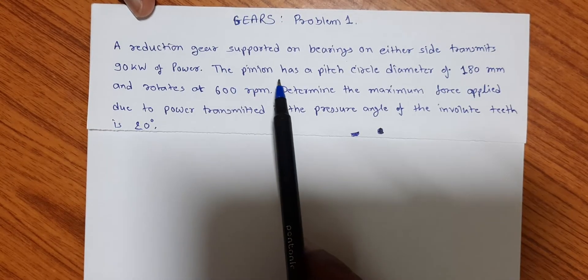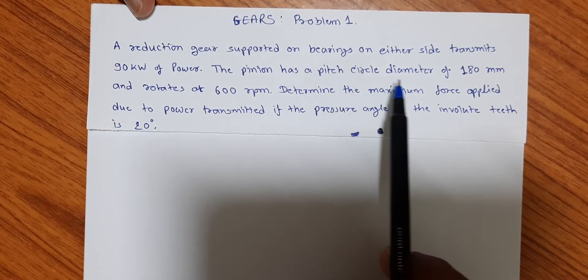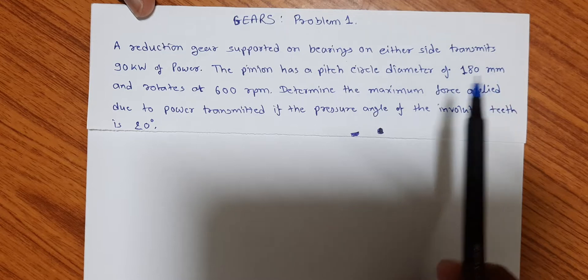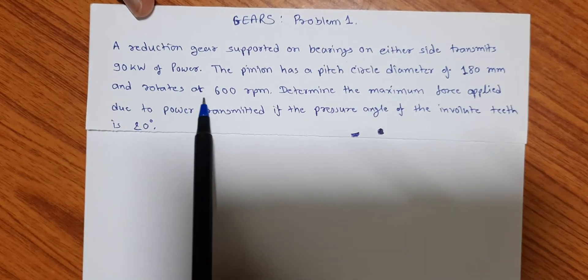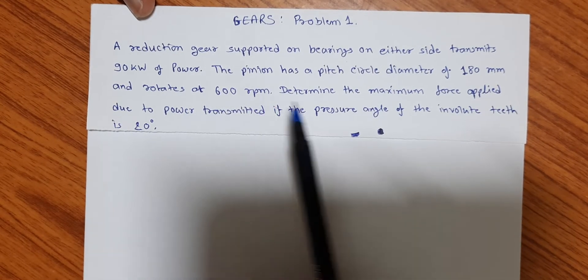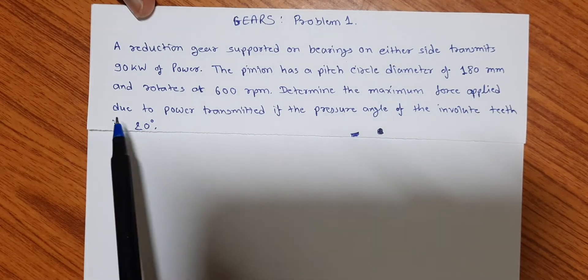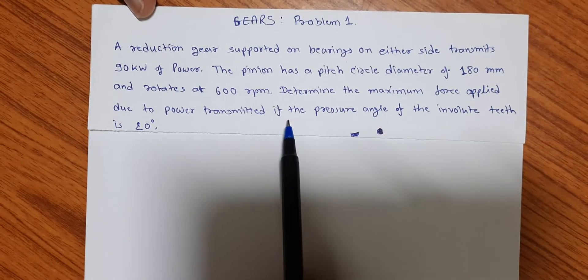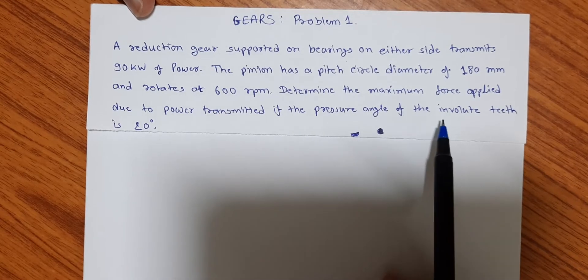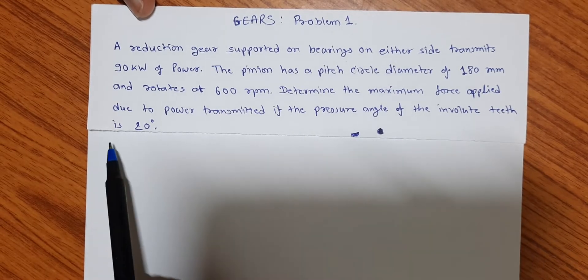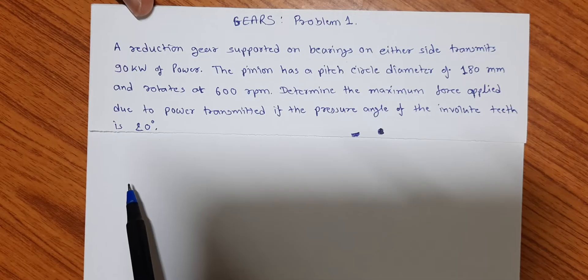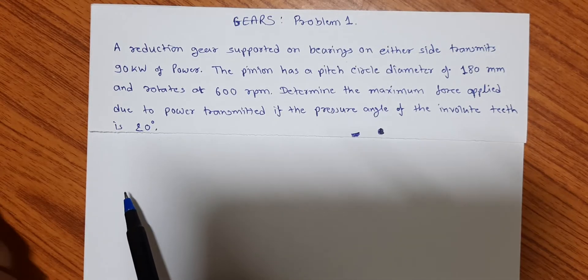The pinion has a pitch circle diameter of 180 millimeters and rotates at 600 rpm. Determine the maximum force applied due to power transmitted if the pressure angle of the involute teeth is 20 degrees.